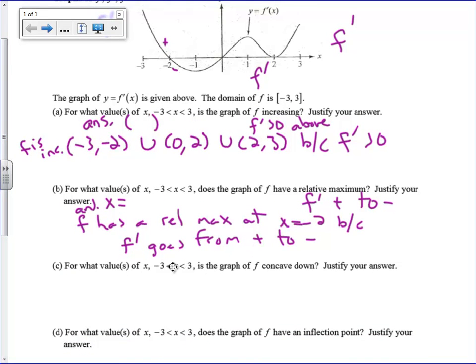The next one is, for what values of x is the graph of f concave down? My answer here has to be in interval notation. For f to be concave down, there's actually two ways to tell this. I could have f' decreasing, or I could have f double prime negative. Since I have the graph of f', I'm going to look and see where f' is decreasing.